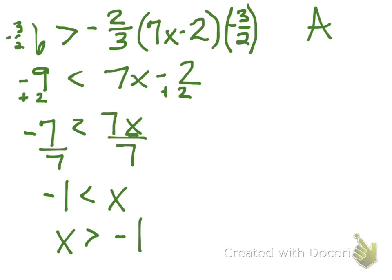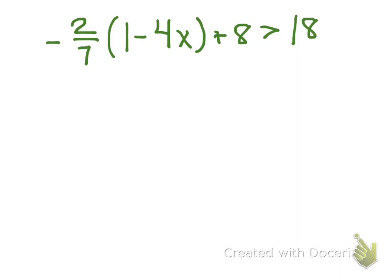Okay, let's try another one. Okay, so now looking at this one, we've got negative two-sevenths times the whole one minus four X. Then I've got this extra plus eight out here. So since the negative two-sevenths isn't being times by this positive eight out here, I've got to get rid of that positive eight first. So I'm just going to go ahead and subtract it from both sides.